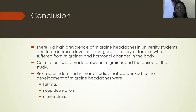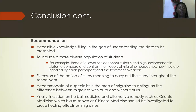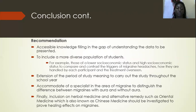In conclusion, there is a high prevalence of migraine headaches in university students. Correlations were made between migraines and the period of study, and risk factors such as lighting, sleep deprivation, and mental stress were identified. Recommendations include: accessible knowledge to include a more diverse student population; extension of the study period throughout the school year; accommodation of specialists to distinguish migraines with and without aura; and investigation of herbal and alternative remedies such as oriental medicine, also known as Chinese medicine, to prove healing effects on migraine.